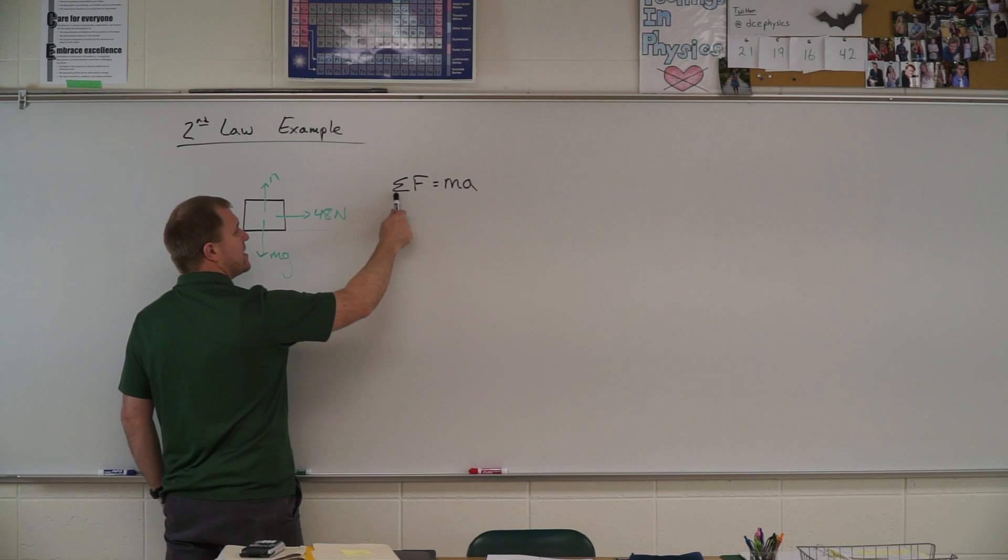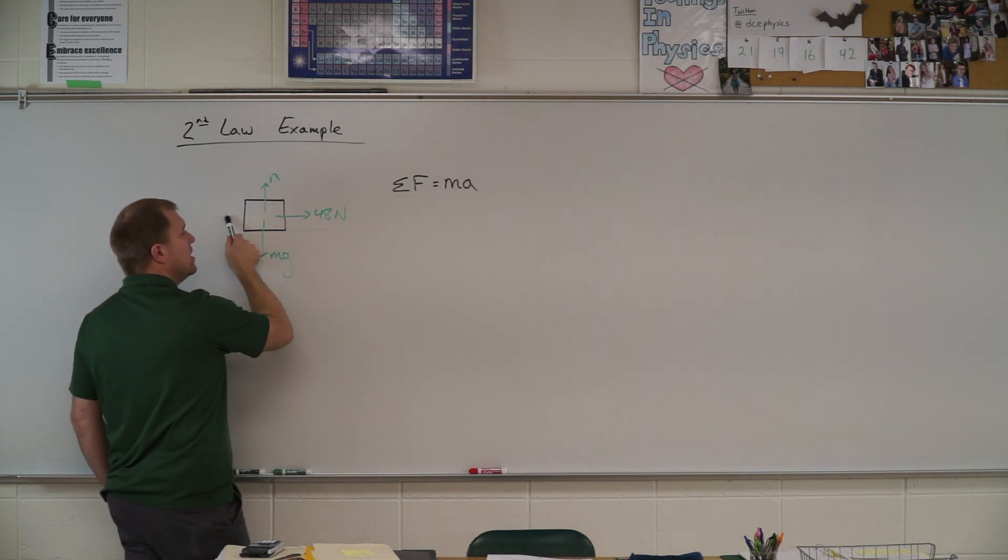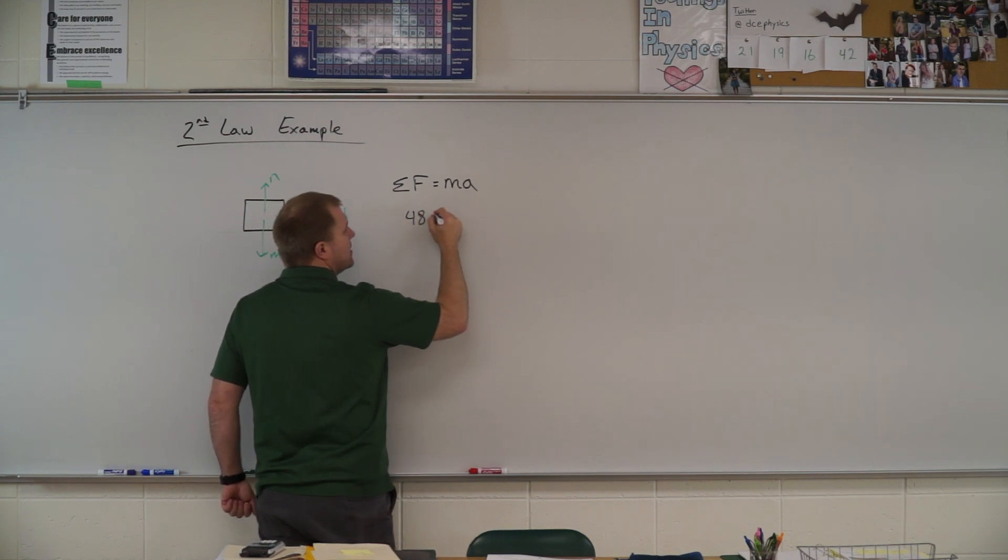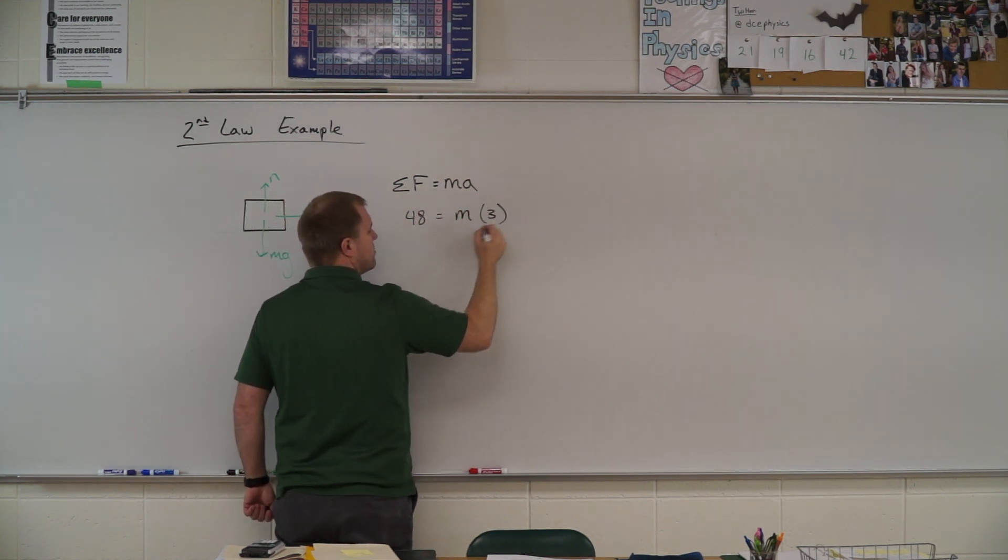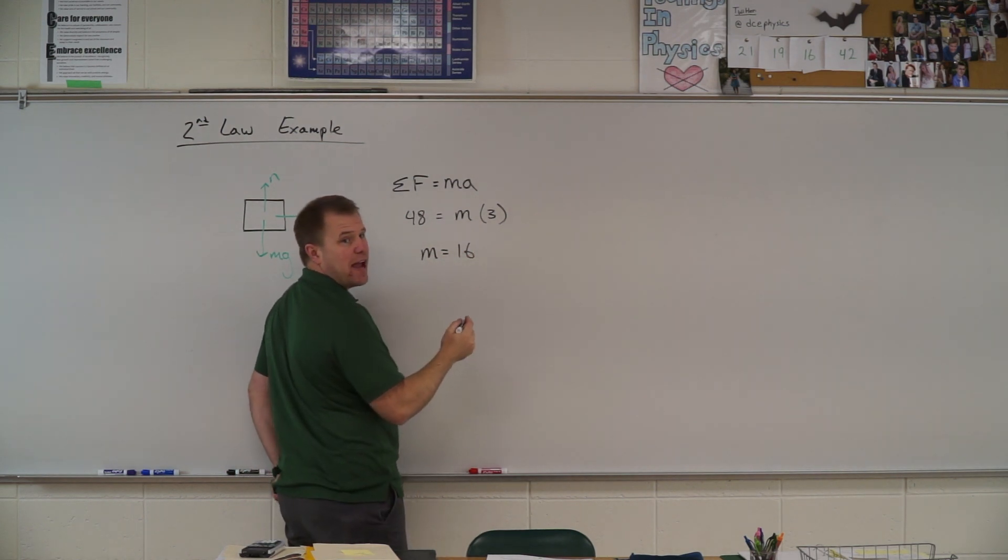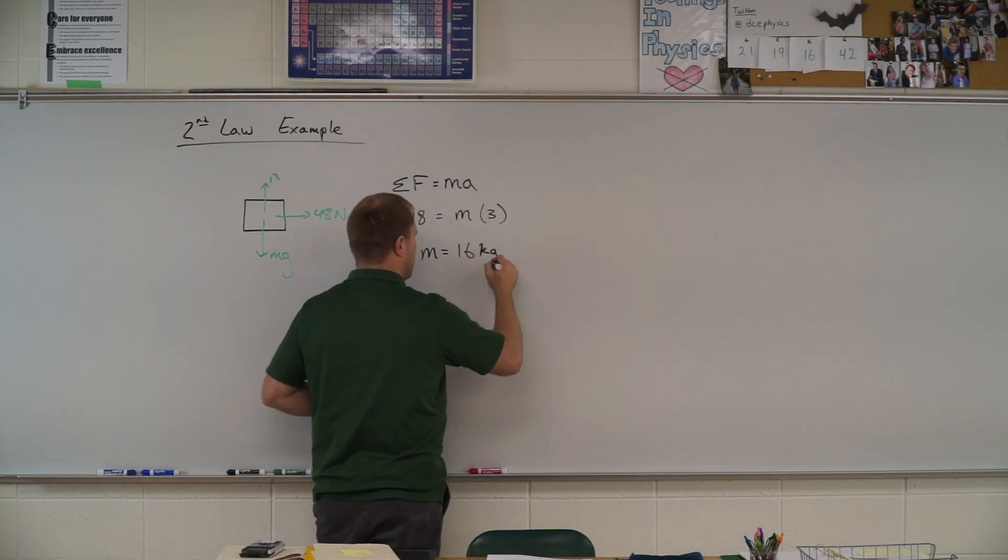So I look at my equation, it says add up those forces in that x direction. And so I end up with 48 is equal to the mass times the acceleration which they said was 3. So my mass comes out to be 16 and the units for mass kilograms is what we are using here.